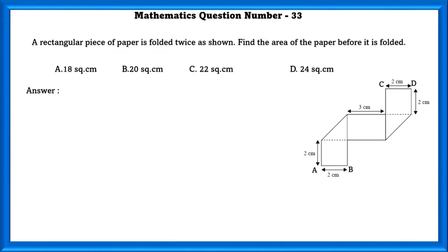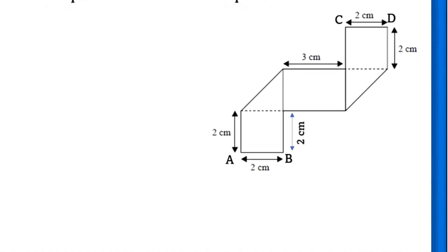Mathematics question number 33. A rectangular piece of paper is folded twice as shown. Find the area of the paper before it was folded. Since A side is 2 cm, B side is also 2 cm. Since the breadth is 2 cm,